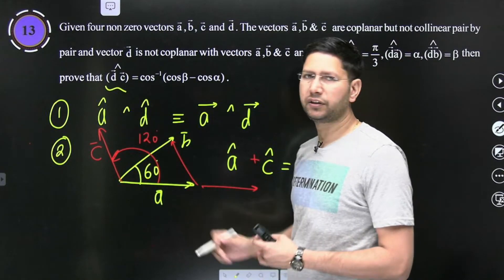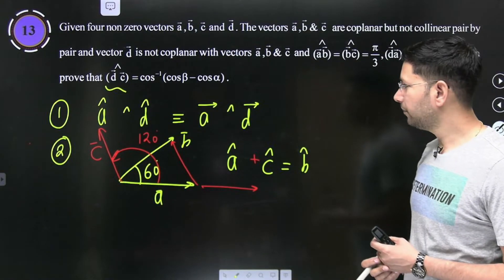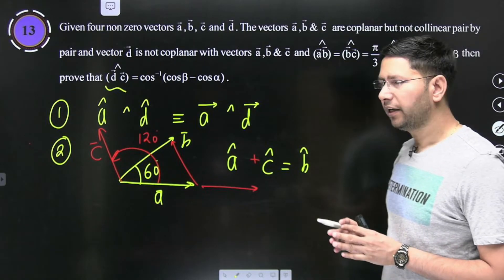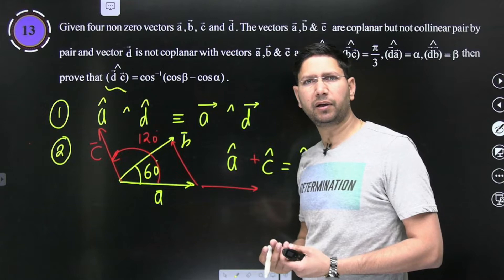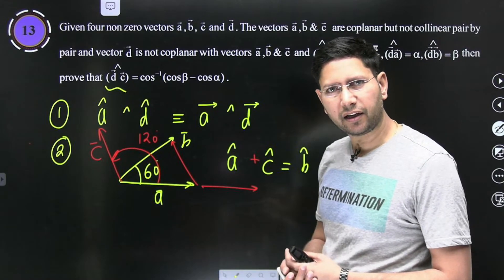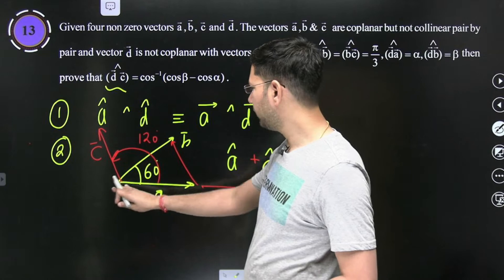A cap plus c cap is equal to b cap hai na. This and this is equal to this hai na, in dono ka resultant ye hai. Thik hai bachon, ye bhoot simple hai. Agar ek plane mein hai vectors aur angle aapas mein 60 hai, sabhi unit vector hai maan lo, to lazmi si baat hai equilateral triangle banega.